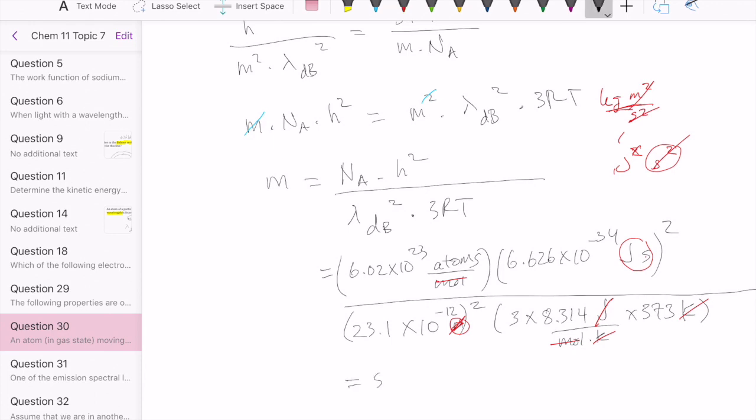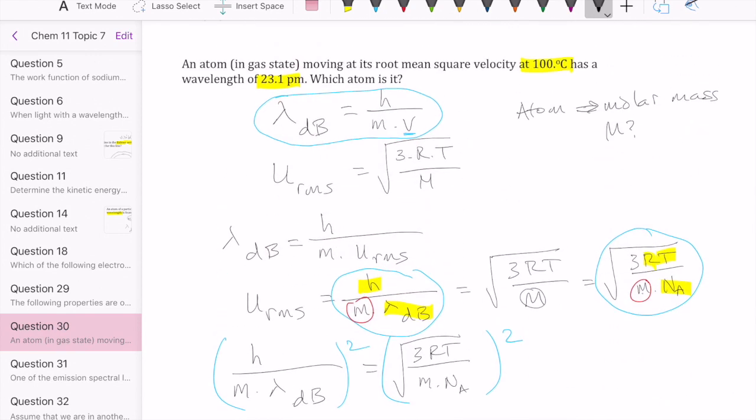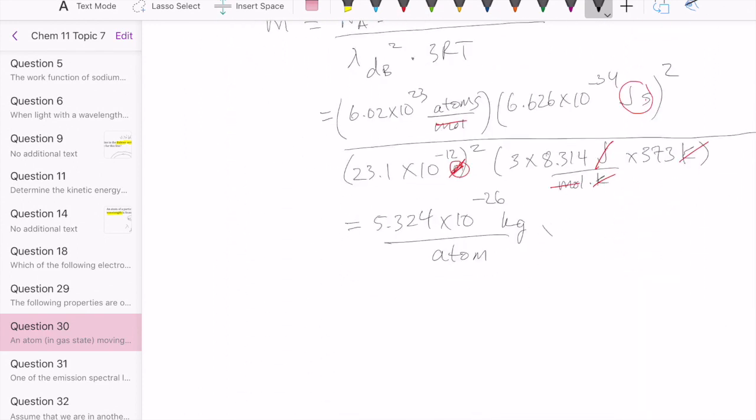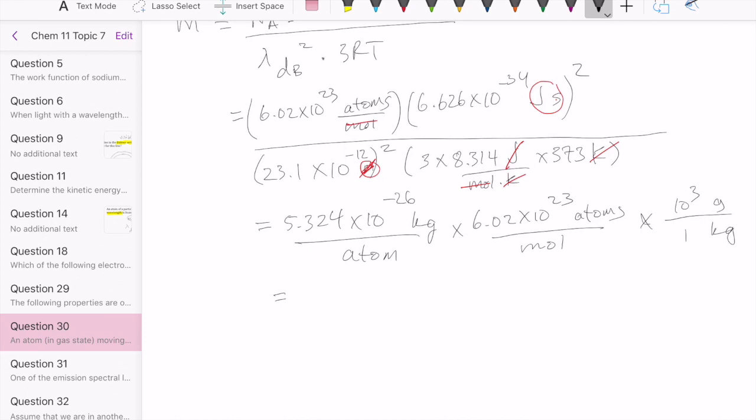So let's calculate that out. You're going to get 5.324 times 10 to the minus 26, and this is kilogram. Now this is per one atom. As we said earlier, in order to be able to identify the atom, we have to figure out the molar mass of the element. So I'm going to have to multiply this by Avogadro's number to get it in grams per mole. So that many atoms per mole. And then since right now I have it in kilogram, I'm going to have to convert that kilogram to gram, 1 and 1000. And multiplying all these together gives me 32 grams per mole at the end, which tells me that this gas must be oxygen.